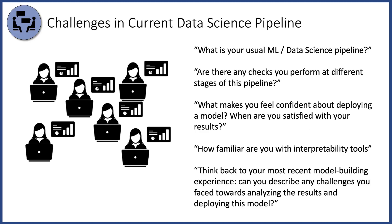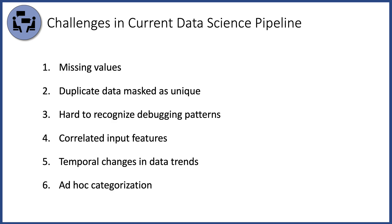We conducted pilot interviews with six data scientists and asked them questions about their day-to-day work. We also asked participants to think back to a recent model-building experience and answer our questions with that experience in mind. Based on a thematic analysis of this data, we uncovered six common challenges in the current data science pipeline. One common problem is when some columns in the dataset are missing values for a subset of the data — how the model developer handles these missing values, for example by imputing them with the mean, can change the output in significant ways. Another common issue arises when duplicate data is masked as unique because of some user-based identifier being attached to it.